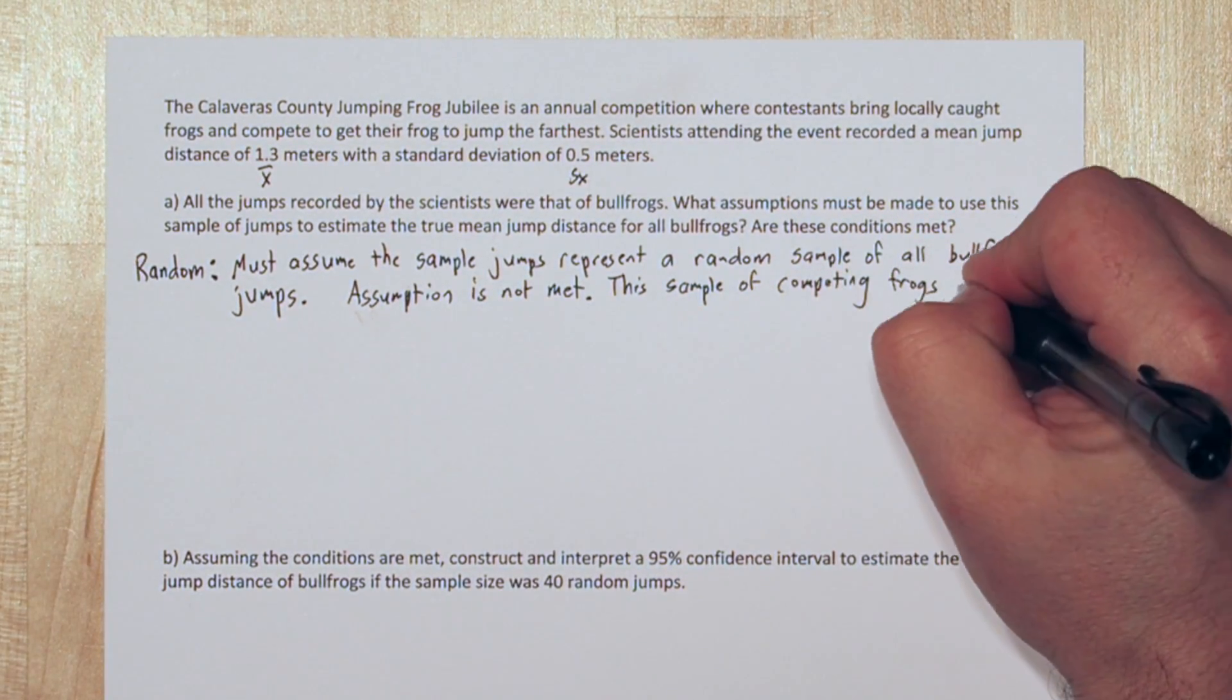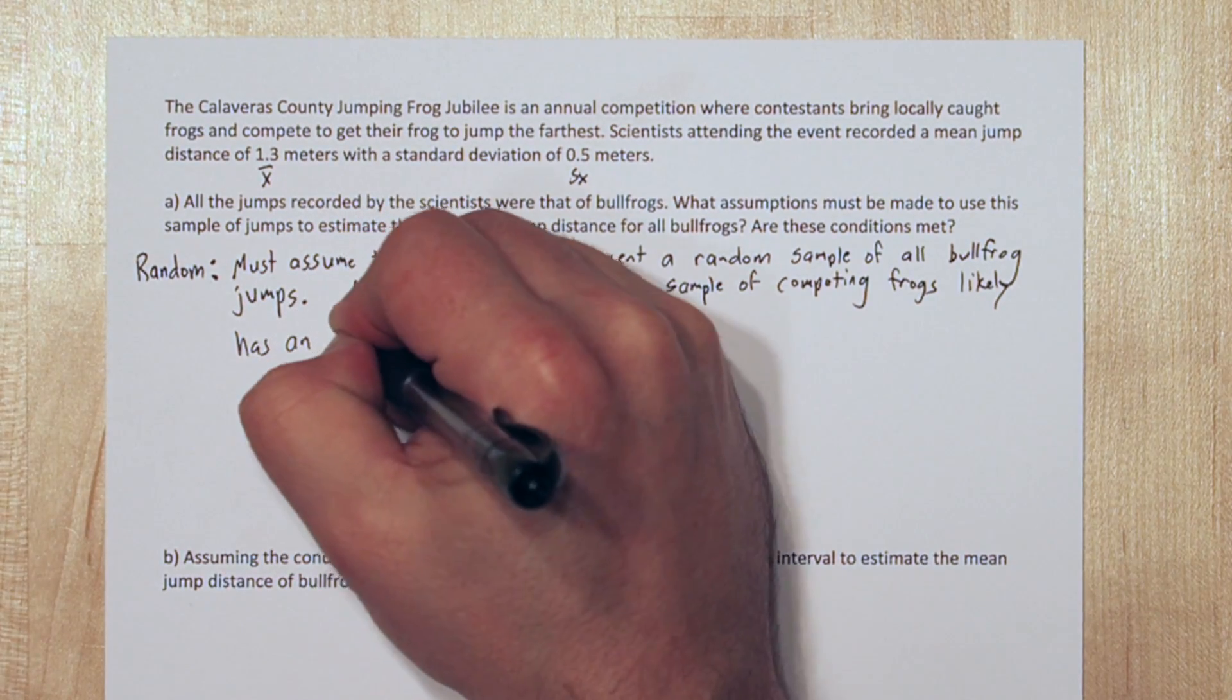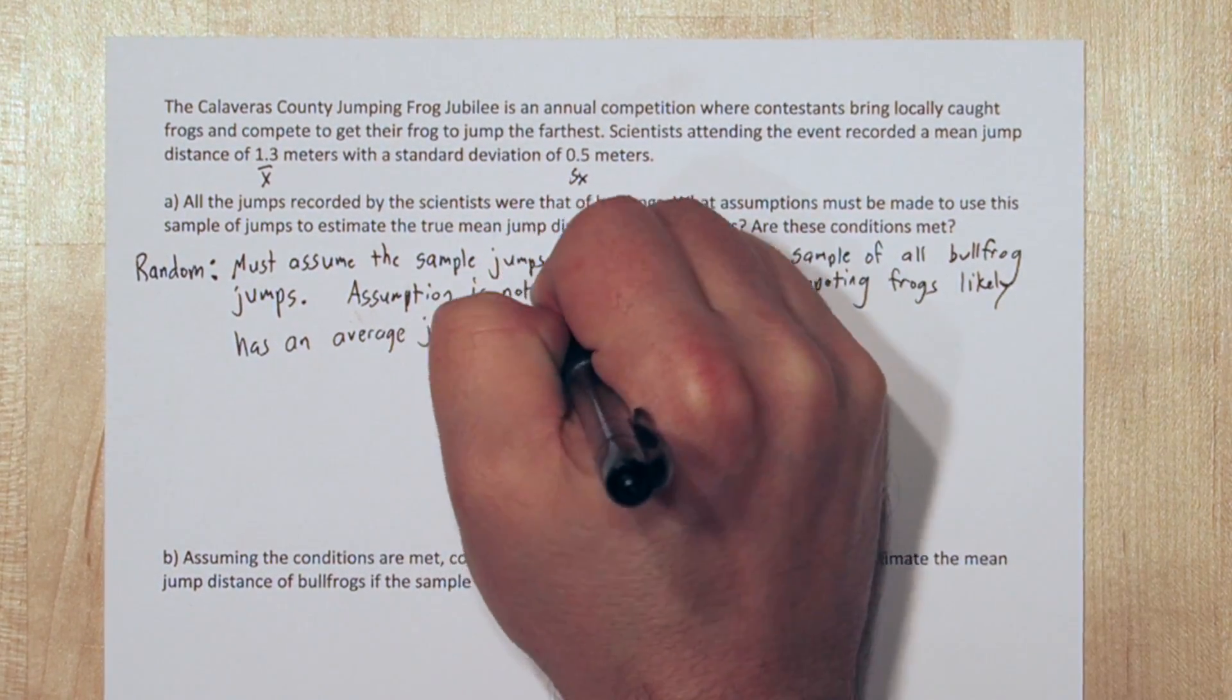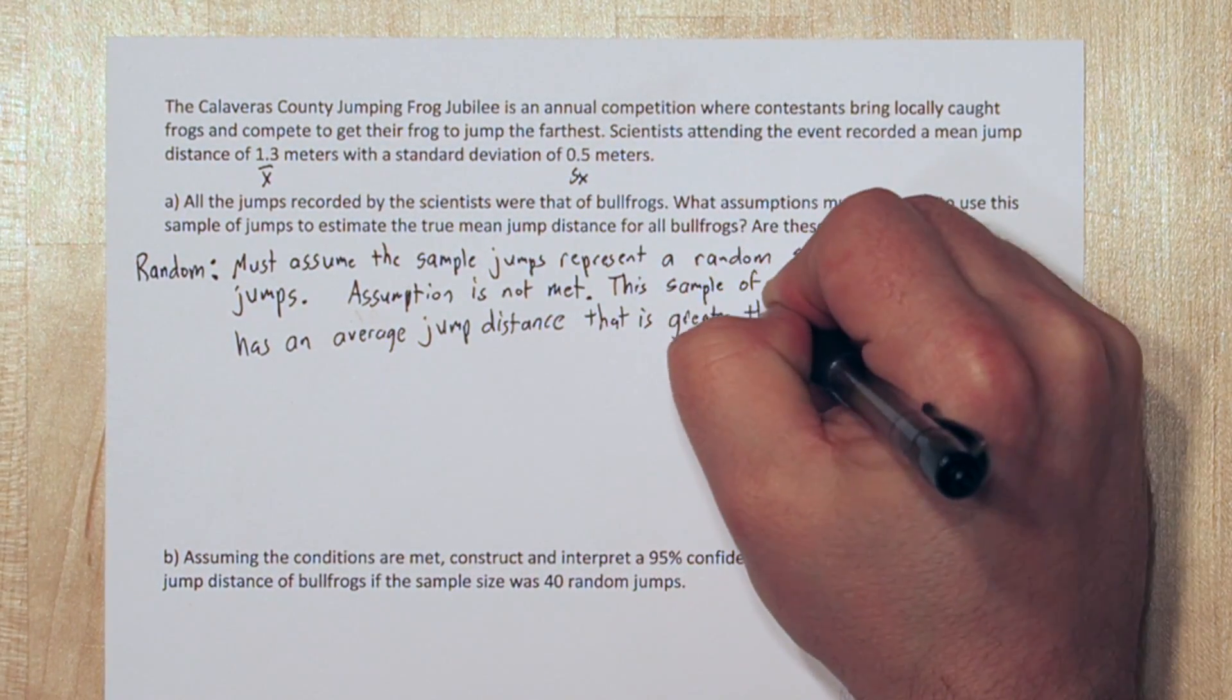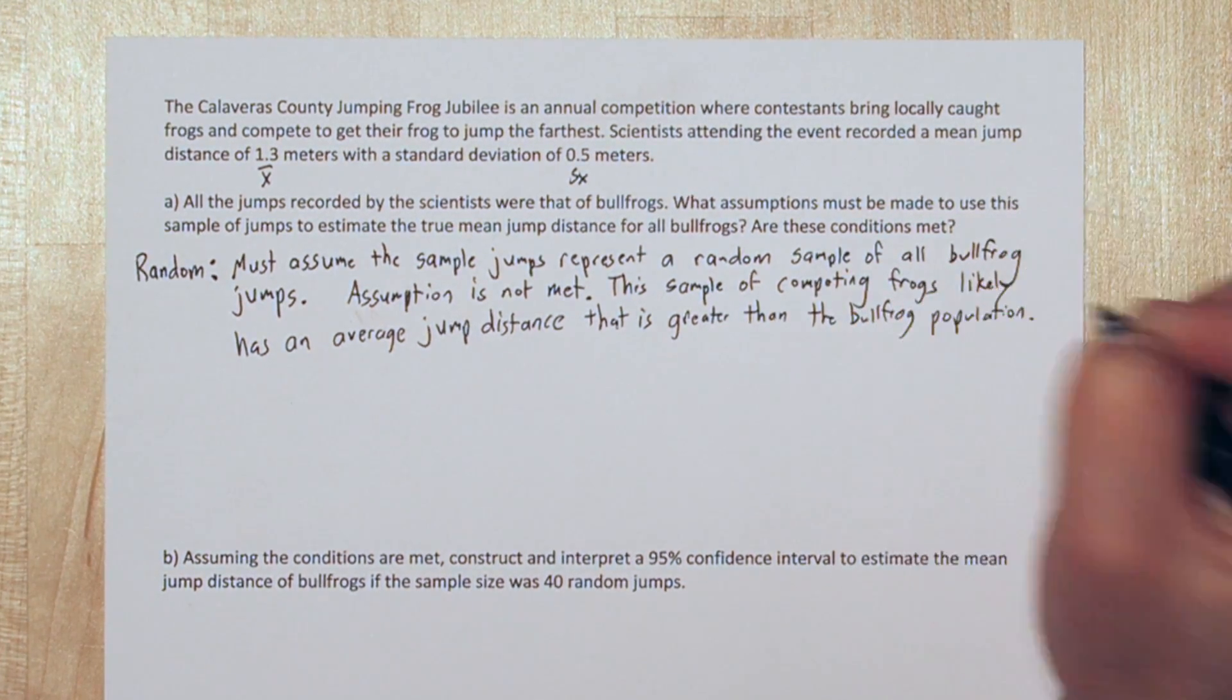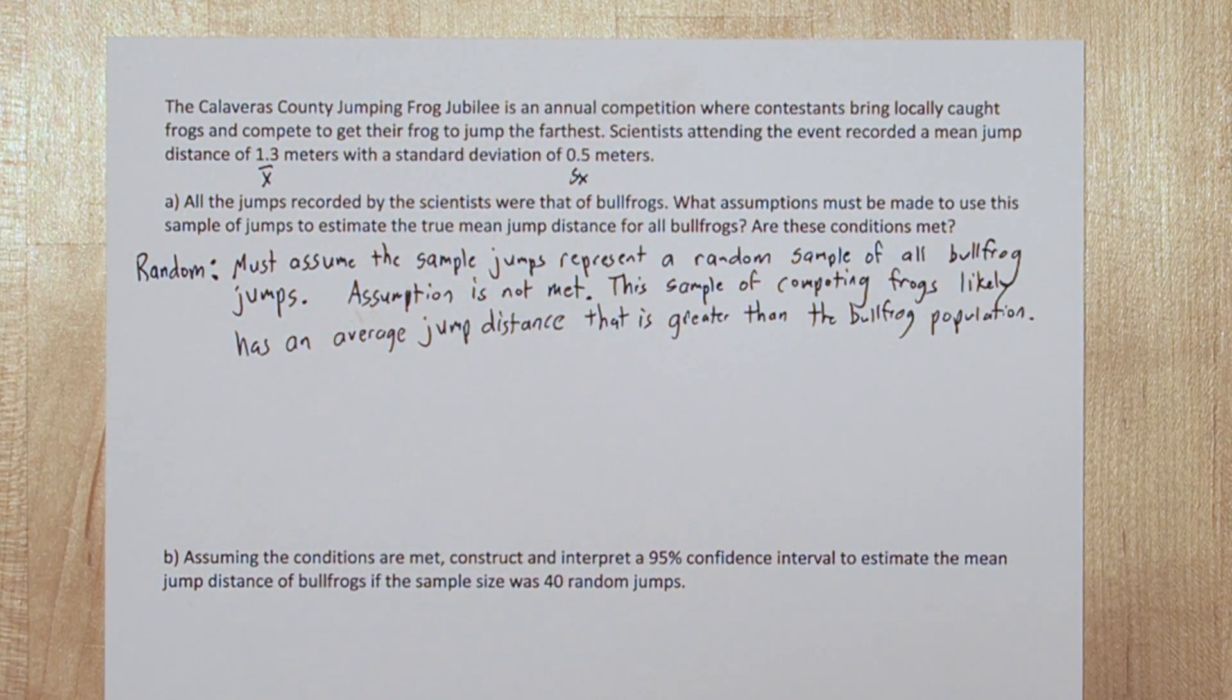This sample of competing frogs likely has an average jump distance that is greater than the bullfrog population. After all, they were selected to compete in a jumping competition. They're not just the average bullfrog.